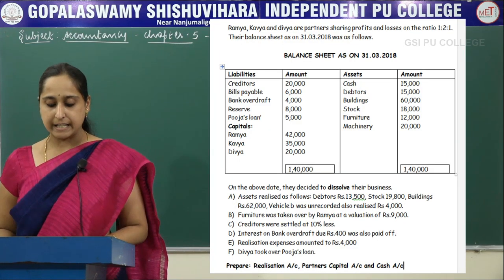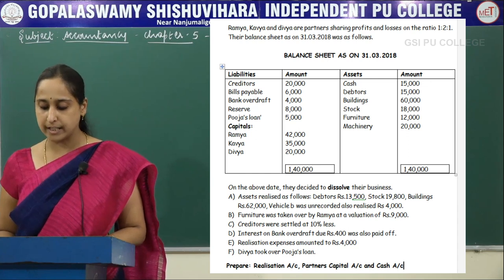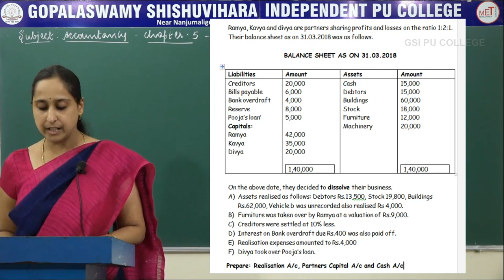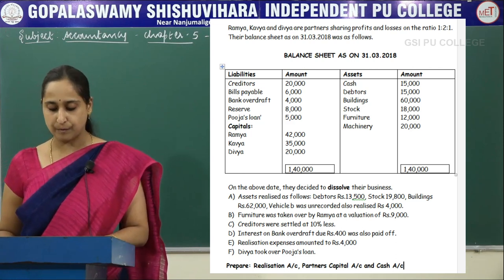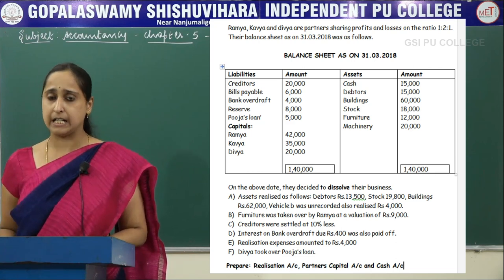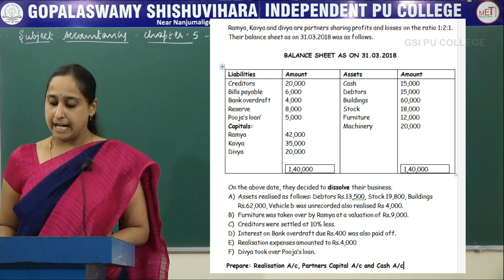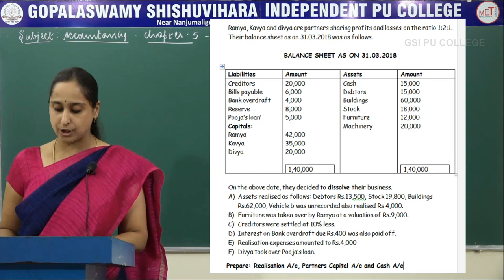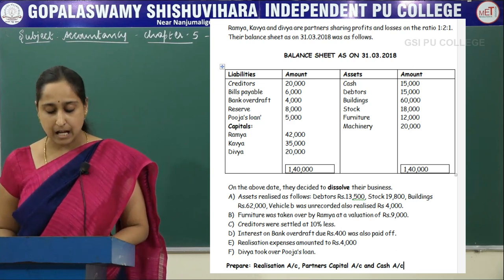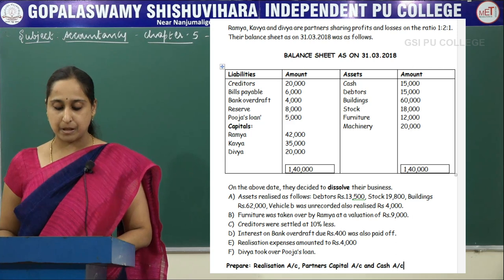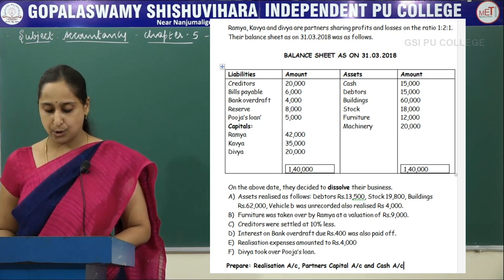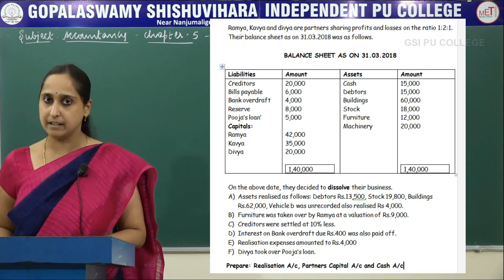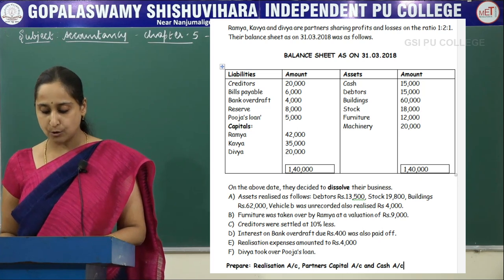Ramya, Kavya and Divya are partners sharing profit and losses in the ratio of 1:2:1. Their balance sheet as on 31st March 2018 was as follows. The balance sheet consists of assets and liabilities. On the asset side, you can see cash, debtors, buildings, stock, furniture and machinery. On the liability side, you can see creditors, bills payable, bank overdraft, reserve, Pooja's loan, and the capitals of partners Ramya, Kavya and Divya. On the above date, they decided to dissolve the business.